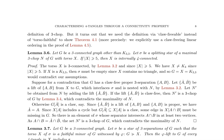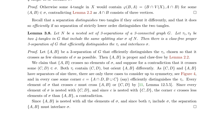The authors also examine the relationship between nested sets of three-separations and four-tangles. They prove that if N is a nested set of three-separations of a three-connected graph G, and tau1, tau2 are two four-tangles in G that include the same splitting star sigma of N, then there exists a claw-free proper three-separation of G that efficiently distinguishes the tau_i and interlaces sigma. This result demonstrates how the nested structure of three-separations can be used to differentiate between distinct four-tangles in a graph.